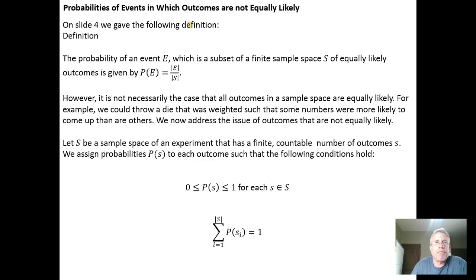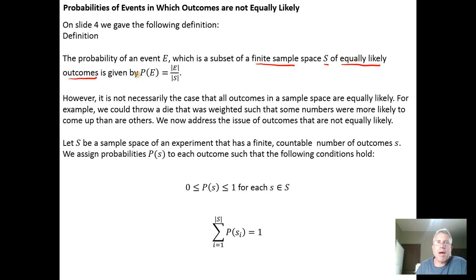Our initial definition for the probability of an event E said that we had a finite sample space where we could count the number of elements in S. If we have a finite sample space containing equally likely outcomes, then to find the probability of some event E, we find the size of the set E — the number of elements in that set — and divide it by the size of the sample space. We'll need a different approach if the outcomes in the set E are not equally likely.